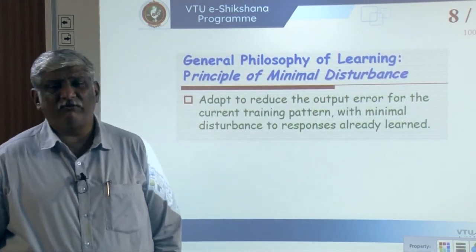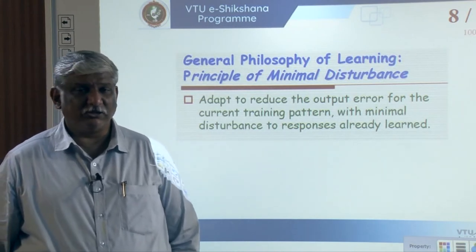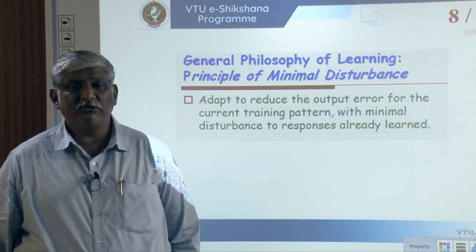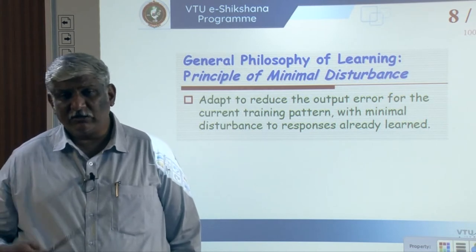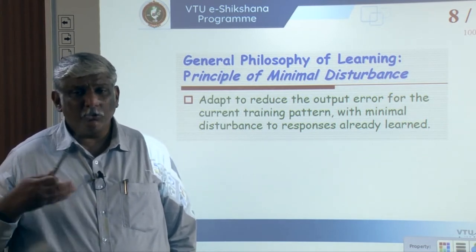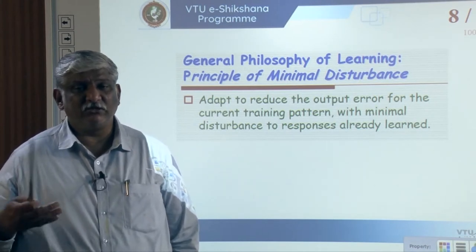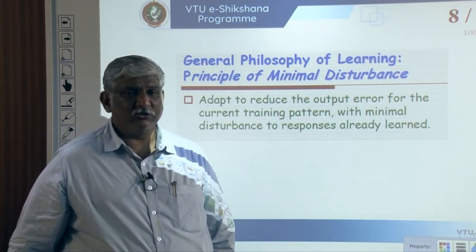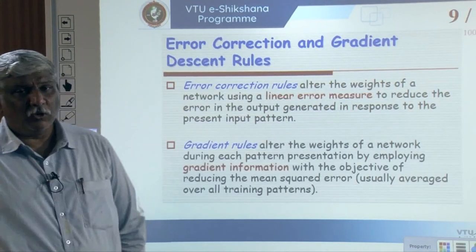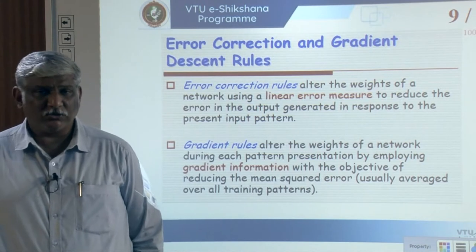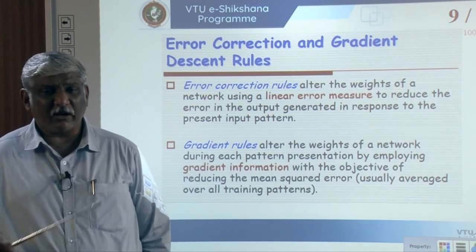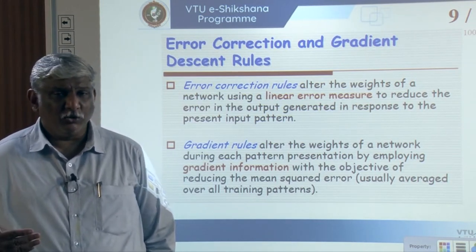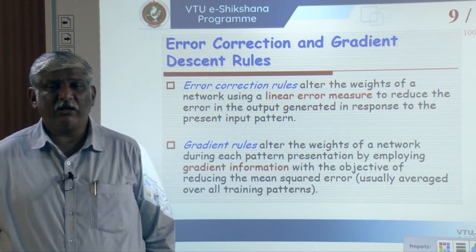The general philosophy of learning is the principle of minimal disturbance: the network adapts to reduce the output error from the current training pattern with minimal disturbance to responses already learned. Even if there is some disturbance, the system should be able to distinguish the expected output. This is the general philosophy of learning, followed by error correction and gradient descent rules.